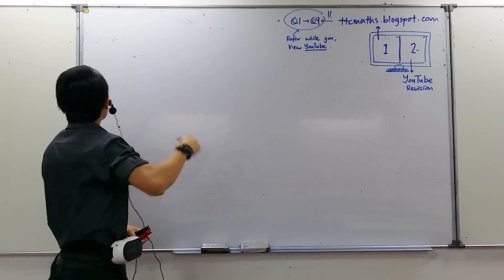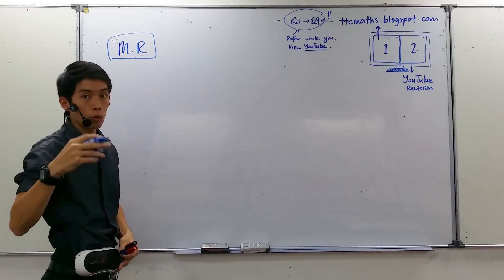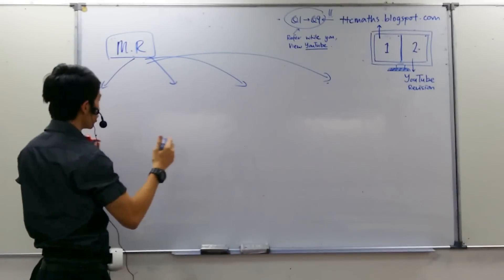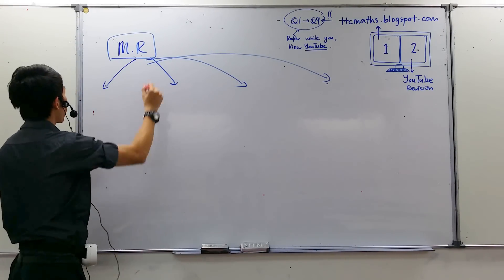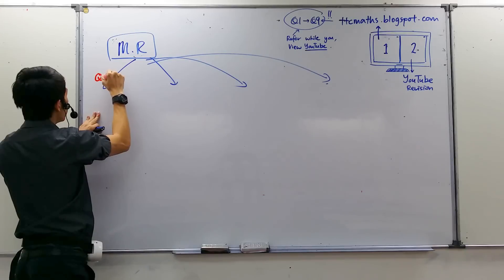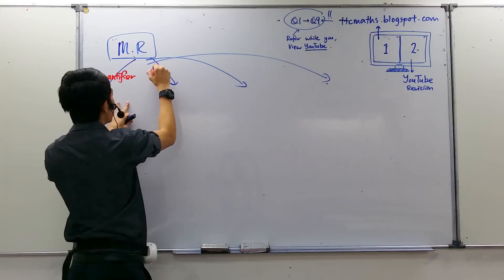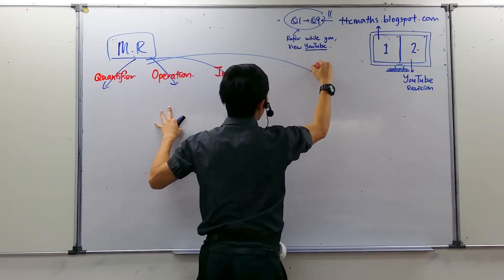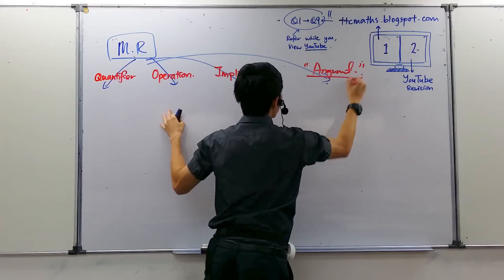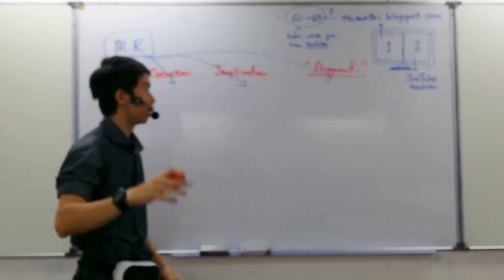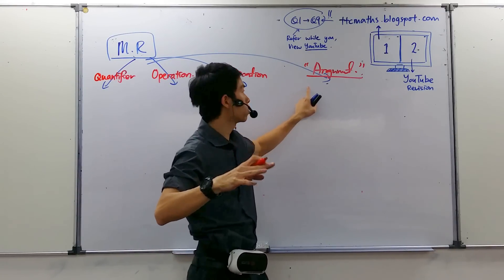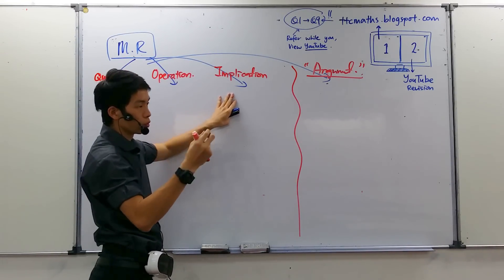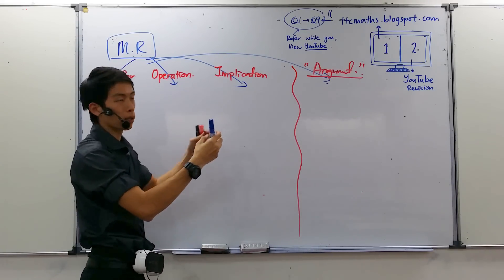So now, for mathematical reasoning, by right there are five parts, but I will focus on four parts only. Number one, number two, number three, and number four. I will separate them like this. The first two are easy. Under quantifier — or maybe I'll just write down one subtopic at a time: quantifier, operation, then implication, and the last one we name as argument. Argument is the most important one, where a lot of students say they apply logic but still don't get the answer. I will use exam format and some patterns to help you.